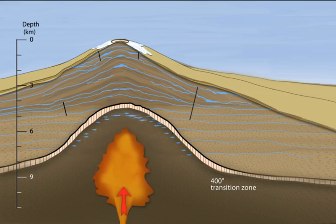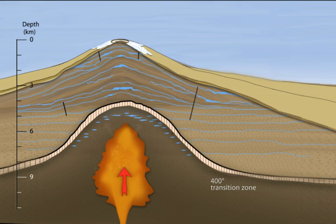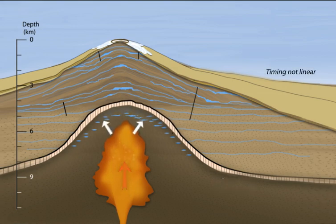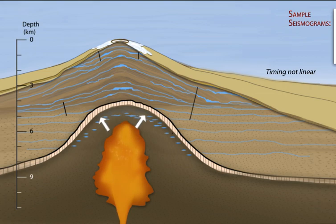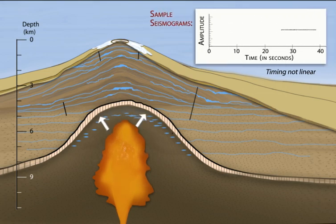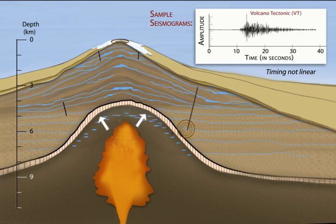As the magma reservoir is filled with new magma from below, it becomes pressurized, pushing the crust upward and outward, but may not be enough to rupture the brittle rocks above. This stress change causes distal volcano tectonic earthquakes to occur in the brittle crust at the base of faults near the volcano.